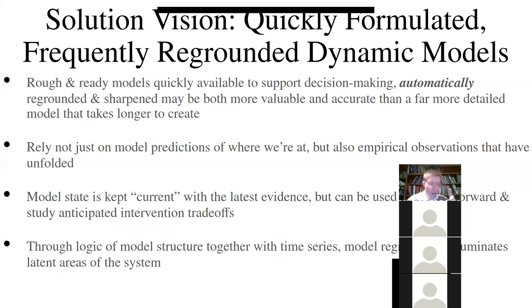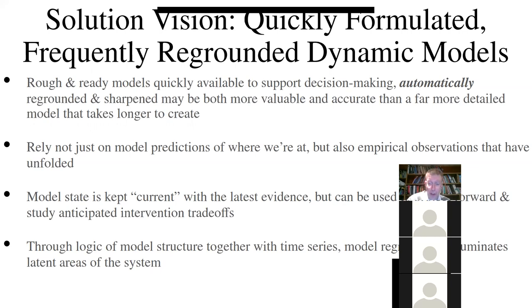But we want the model to stay true to what's actually happened — okay, that happened; maybe we couldn't anticipate it, but given that it happened, we want the model to kind of stay savvy to it and say, what now? Just like a GPS system — if we miss our turn, we expect it to tell us where to turn next. We might not have been able to go the way we wanted, but what course of action do we have best now? So we want a model that stays aware of what's going on.